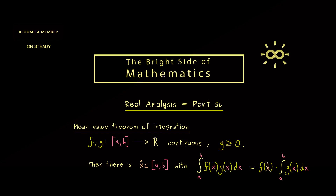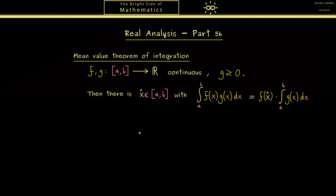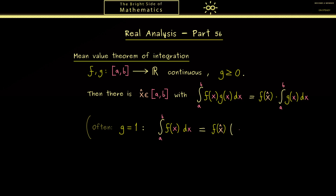Often you see a more special version of this theorem, and we also only need this special version — it is better to visualize. We get this version when we eliminate g by setting it to the constant 1. Then on the left-hand side we just have the integral of the function f, and on the right-hand side we don't need an integral anymore — we just have the integral of the constant, which means we have b minus a.